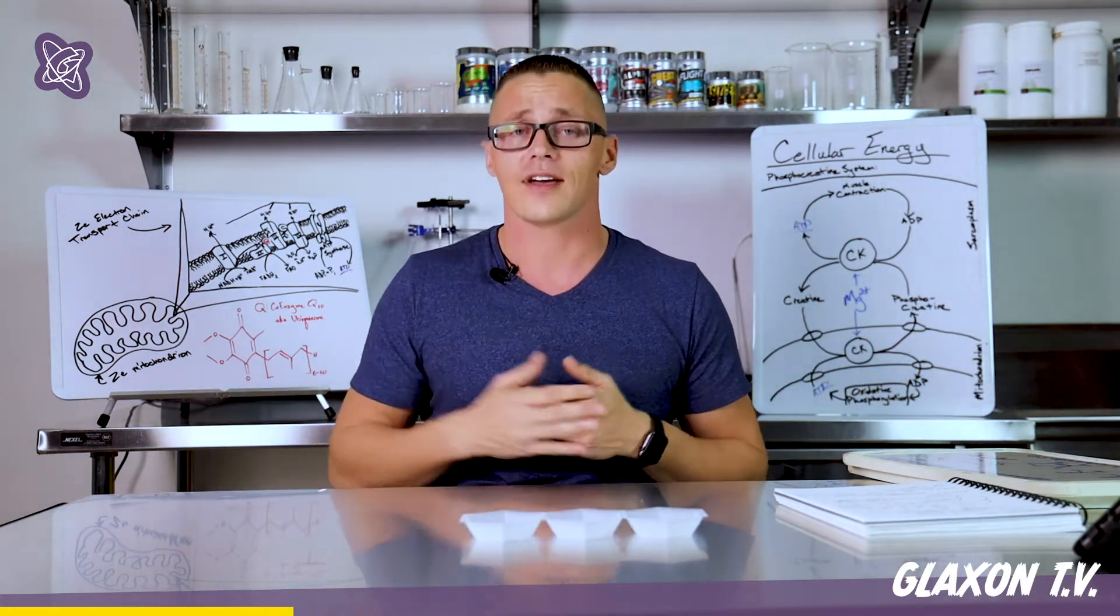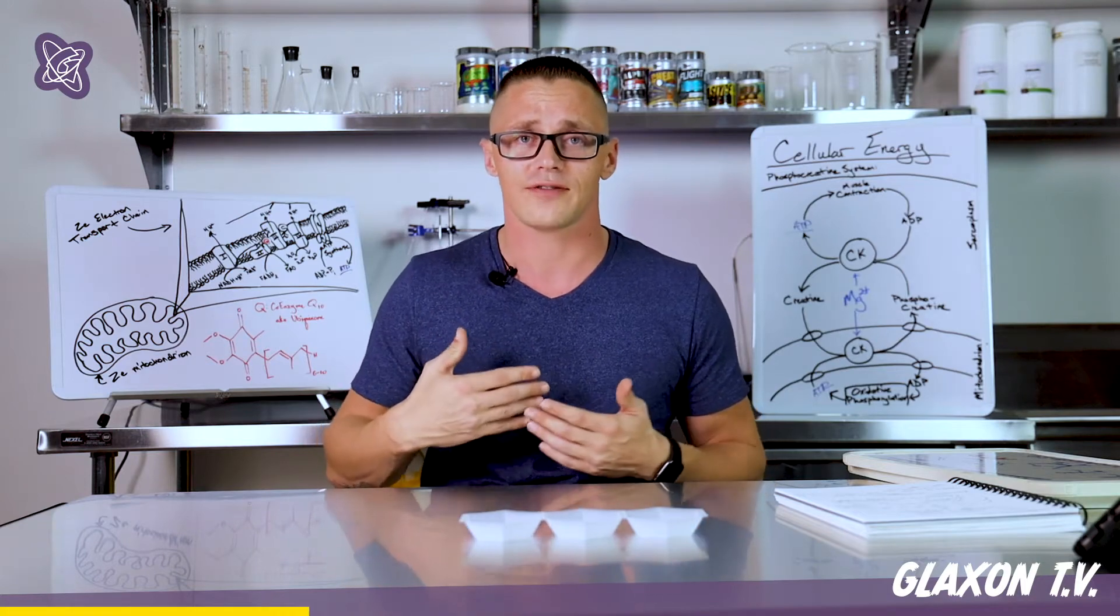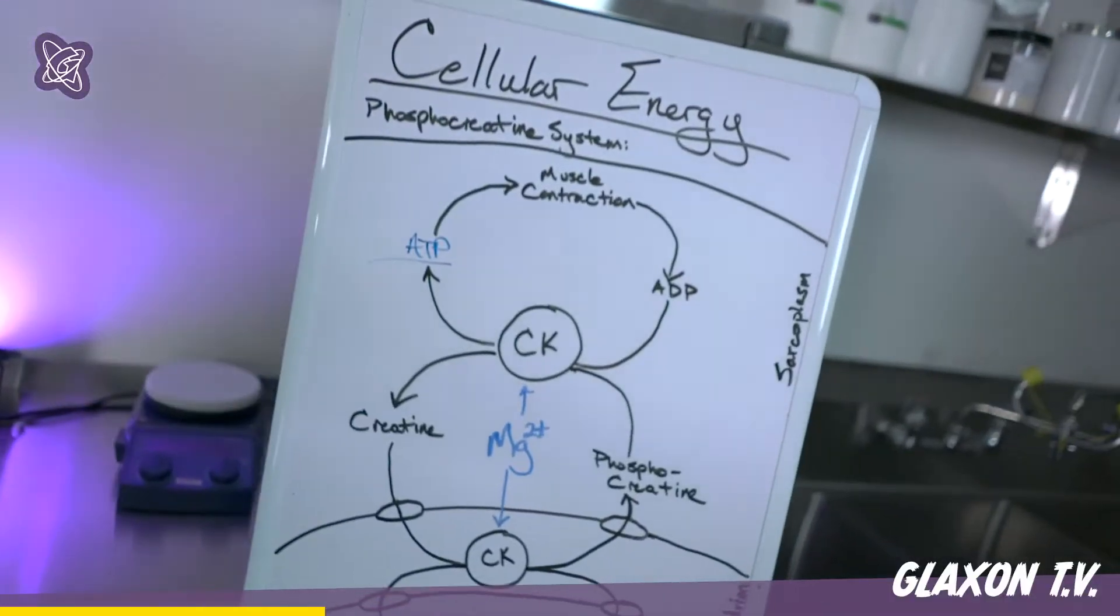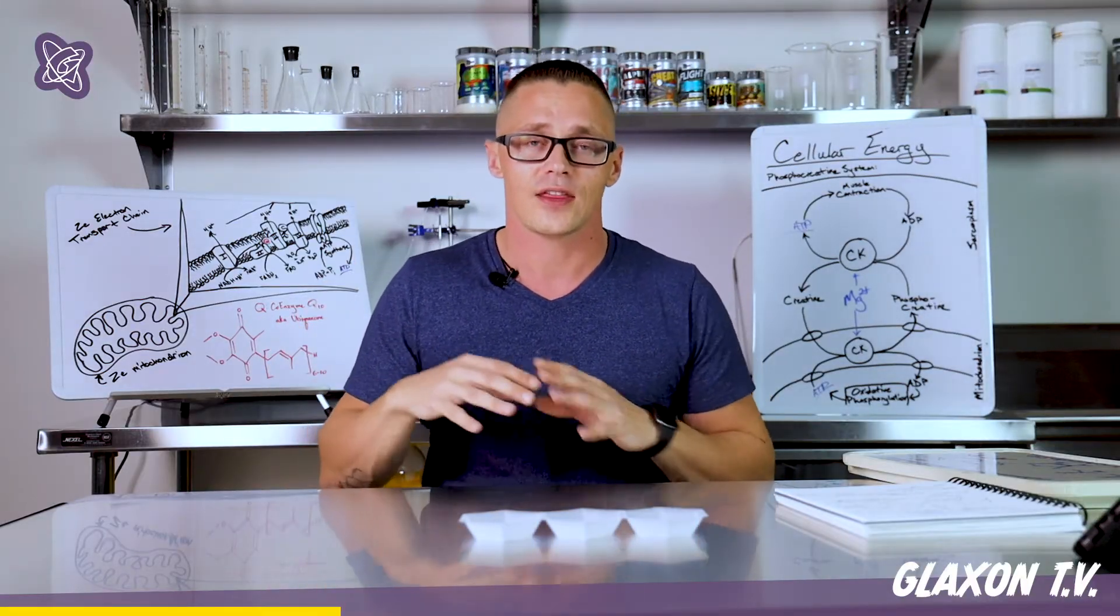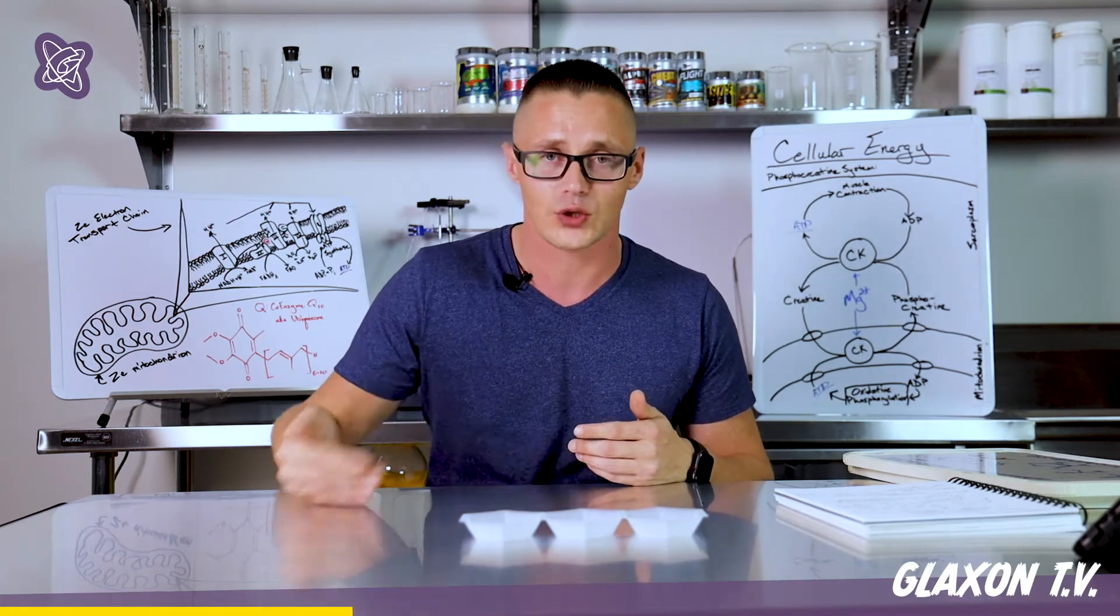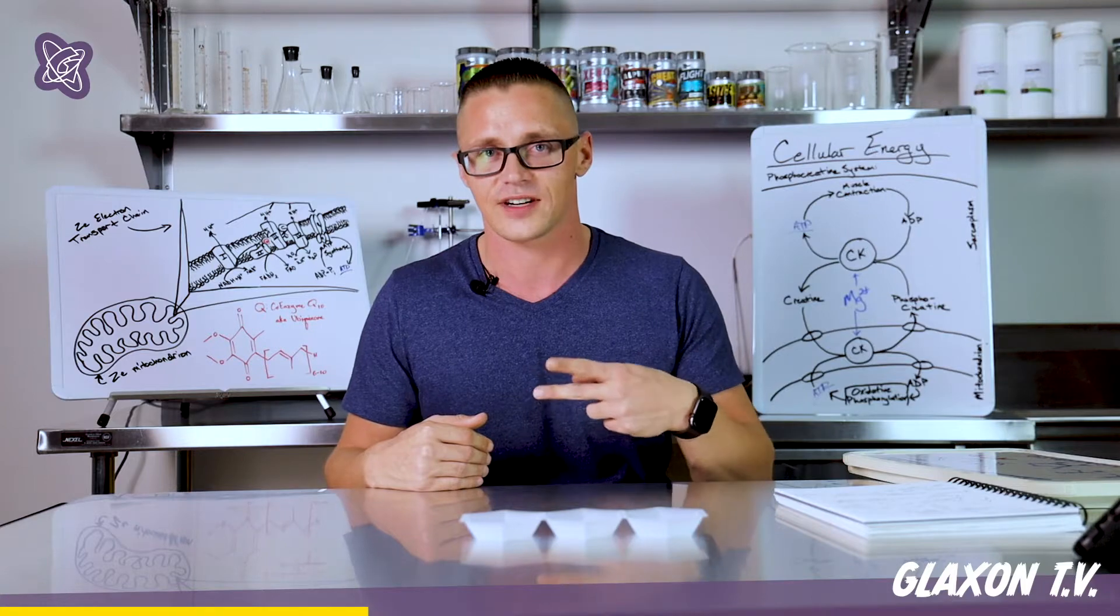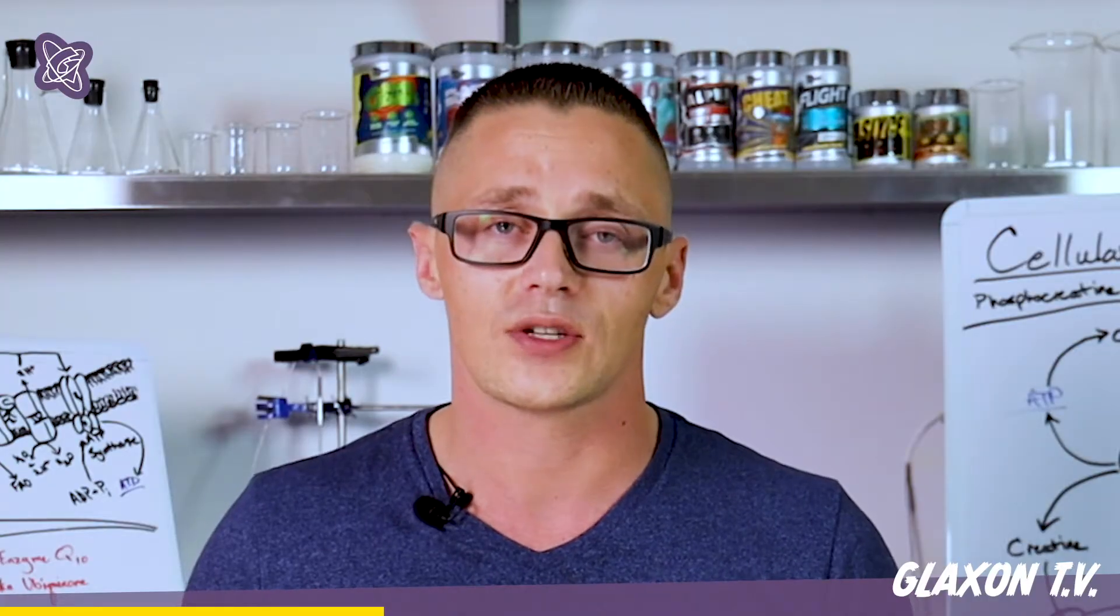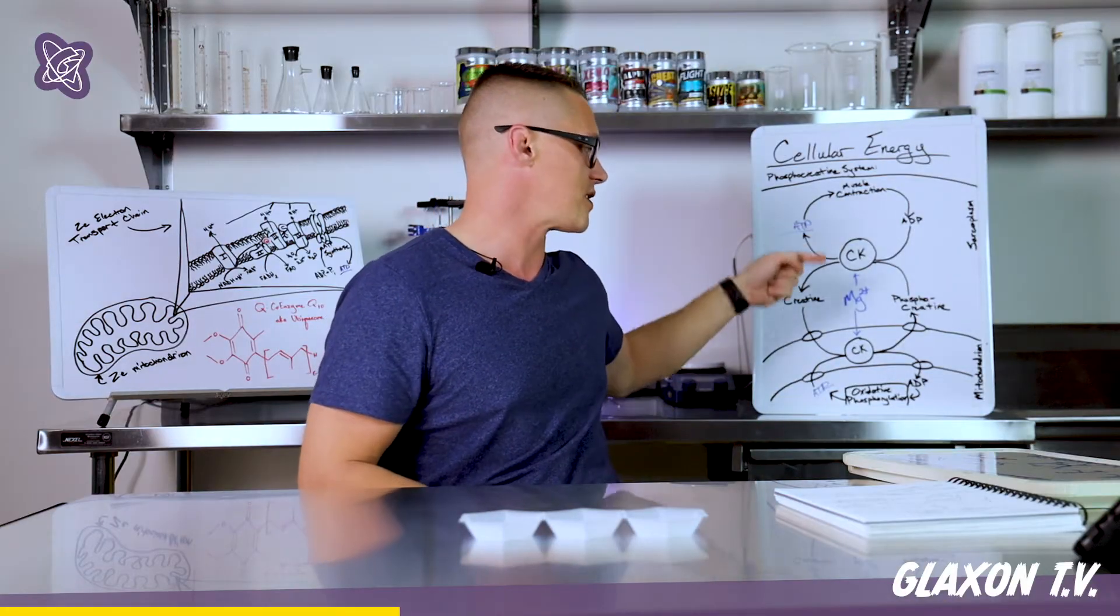Well, for one, having an ample amount of creatine is something that can actually help your body shuffle around phosphates, and I've got that in this sweet little drawing over here, where ATP and creatine phosphate exist in this dynamic equilibrium with actual creatine and ADP, the precursor to ATP. That's a diphosphate that becomes a triphosphate.